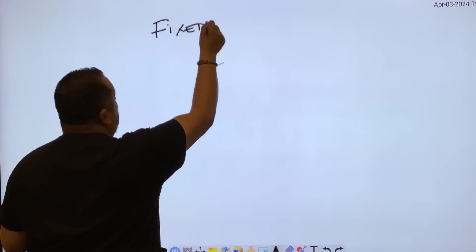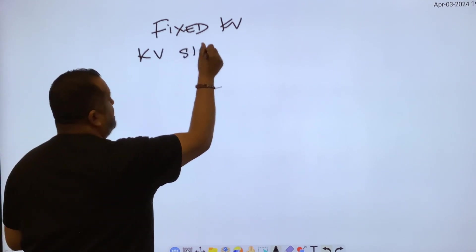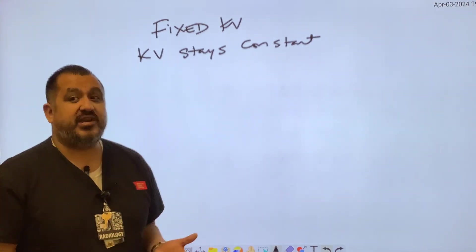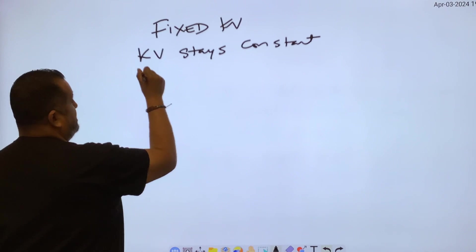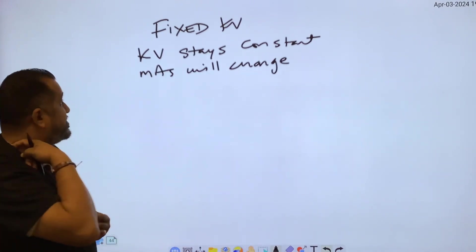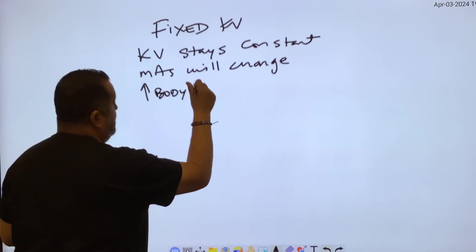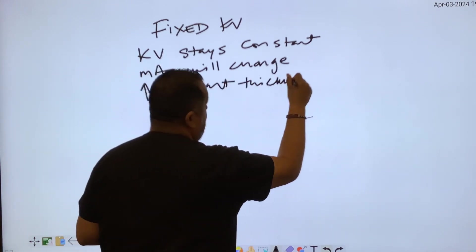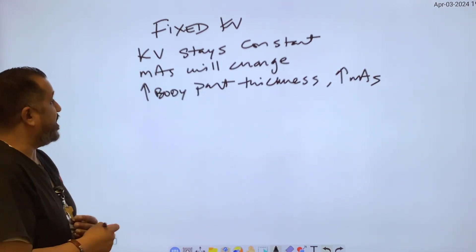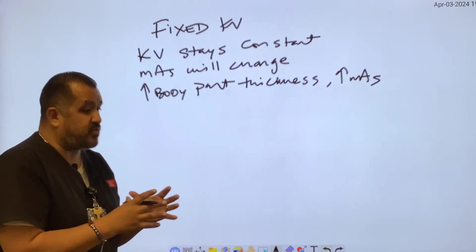Now what I'm going to show you is fixed KV. Exactly what the term means - the KVP or KV stays constant. If it stays constant, it doesn't change. So what changes is your mAs. Obviously it's going to go up with body part thickness as well. So if you go up in body part thickness, you're going to have to go up in mAs. And if your body part thickness goes down, you're going to have to go down in mAs.